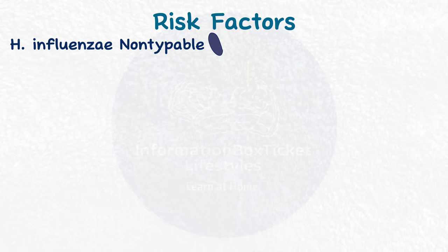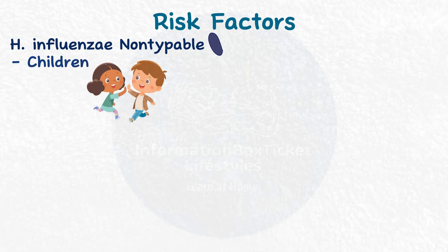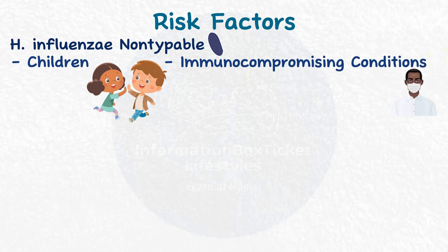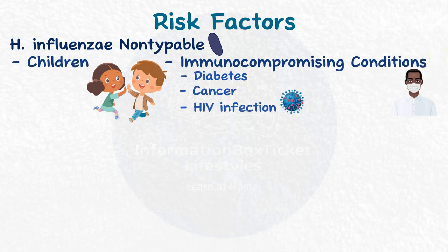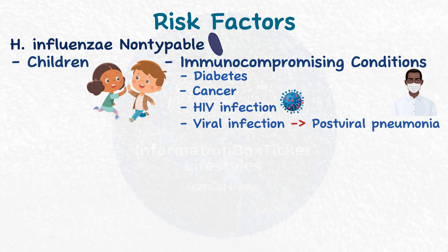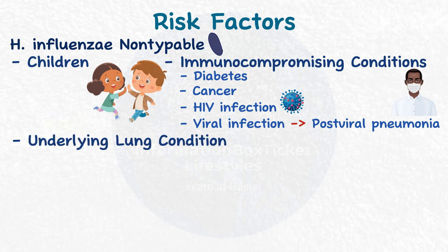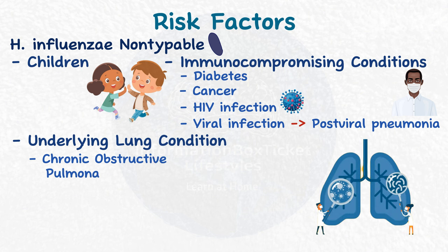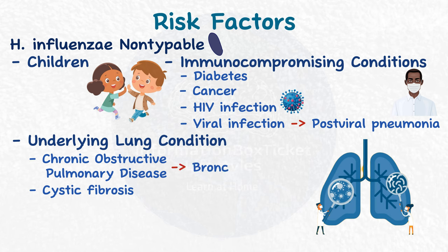Haemophilus influenzae non-typable most commonly causes sickness in children and those with immunocompromising diseases such as diabetes, cancer, or HIV infection. It is also possible to develop post-viral pneumonia following a viral infection. Other risk factors include underlying lung illnesses like chronic obstructive pulmonary disease or cystic fibrosis. In persons with COPD, Haemophilus influenzae non-typable causes bronchopneumonia.